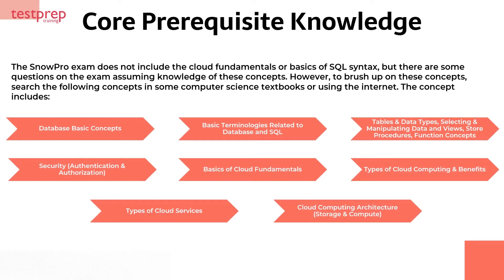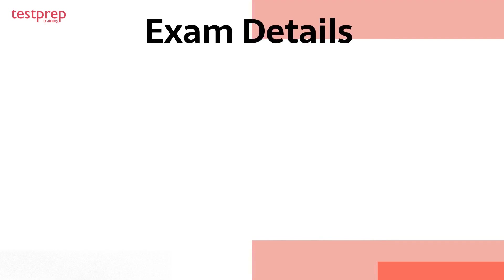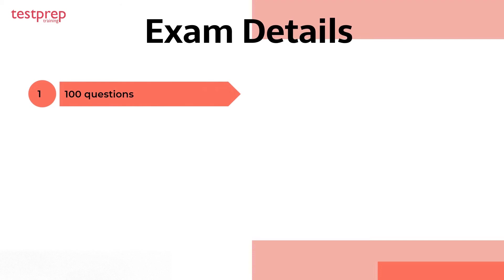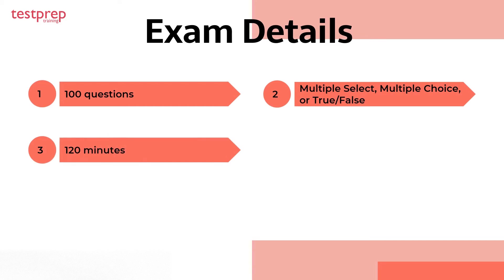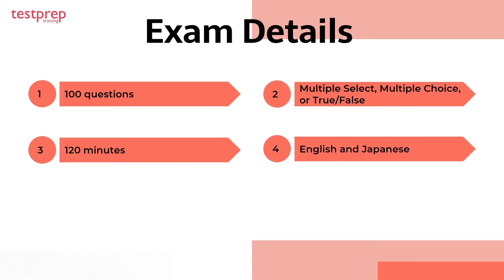Exam details: the Snow Pro Core Certification exam will have 100 questions that will be of type multiple select, multiple choice, or true or false. The time duration to complete the Snow Pro Core exam will be 120 minutes. Talking about the exam language, this is available in two languages: English and Japanese.